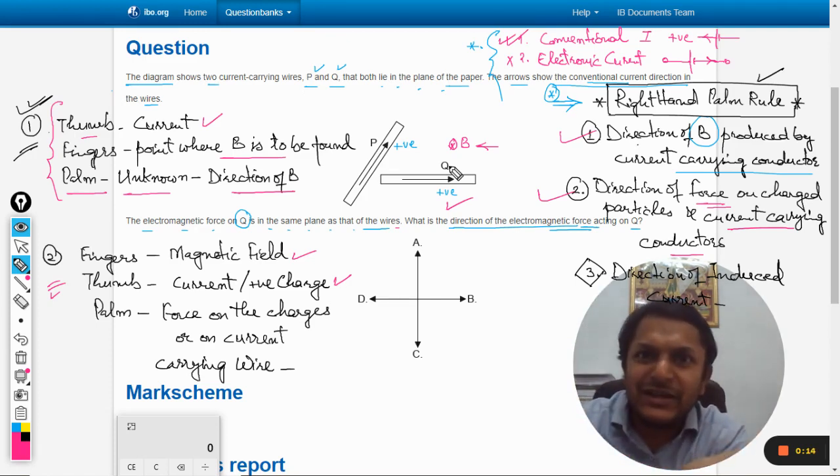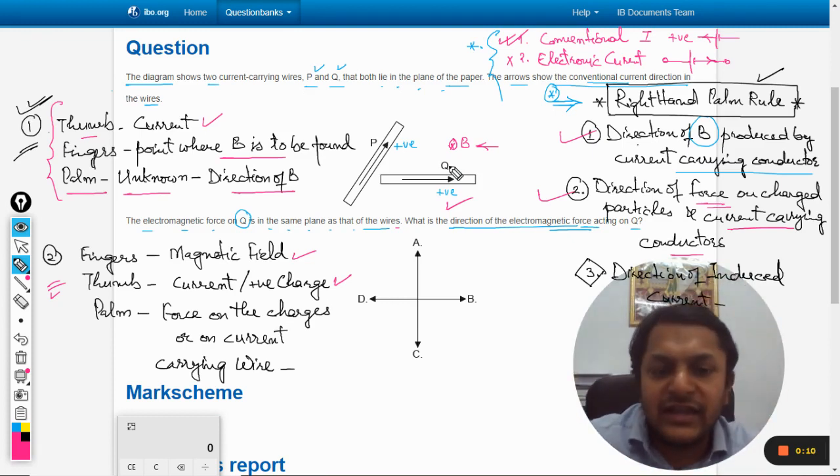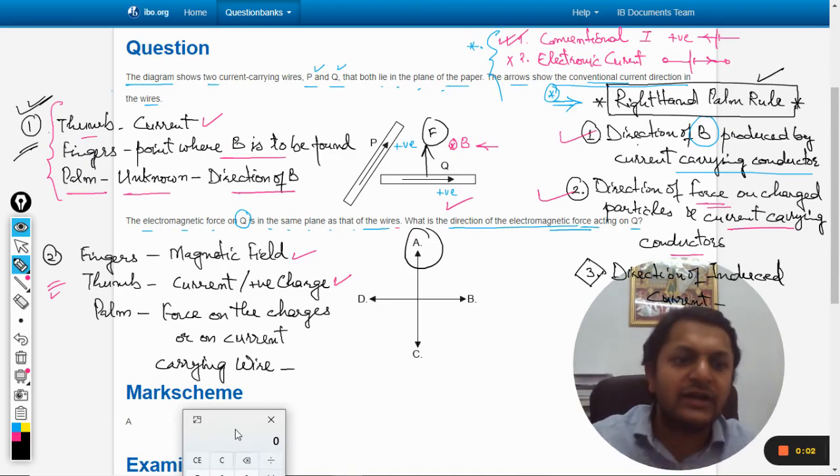So the wire will be experiencing a force in the upward direction. So I think I am pretty clear in this explanation now. So this will be the direction of the force. So A should be the answer and according to the markscheme A.